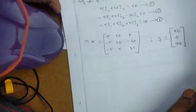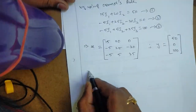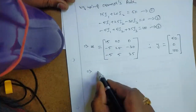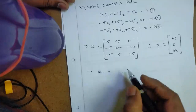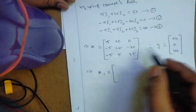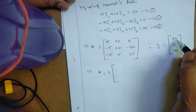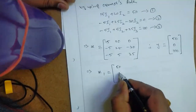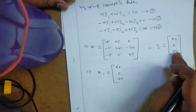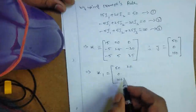Next, we find det(X). First, we write X1. Matrix X1 is formed by replacing the first column of matrix X with matrix Y. That means the first column becomes 50, 0, 100. The remaining two columns remain the same as in matrix X: 20, 25, 5 and 0, minus 30, 35.